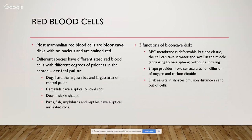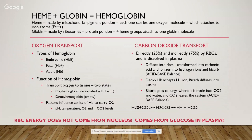There are three functions of the biconcave disc shape. The red blood cell membrane is deformable but not elastic, so the cell can take in water and swell in the middle without rupturing completely. That shape also provides more surface area for diffusion of oxygen and carbon dioxide, and results in a shorter diffusion distance in and out of the cell. Heme plus globin equals hemoglobin. Heme is made by mitochondria — it's the pigment portion, and each heme carries one oxygen molecule which attaches to iron atoms. Globin is made by ribosomes and is the protein portion. Four heme groups can attach to one globin molecule.